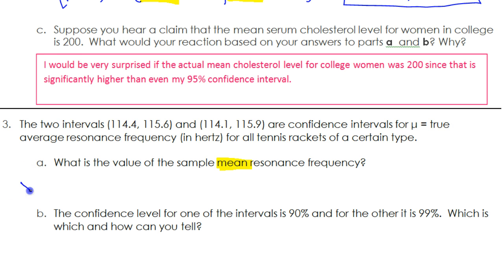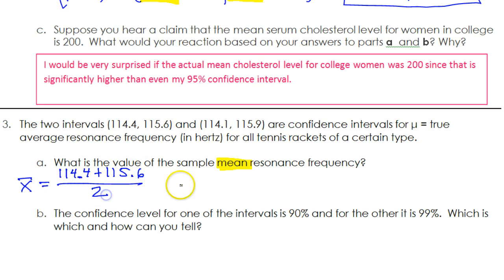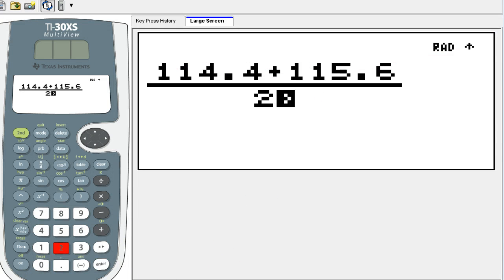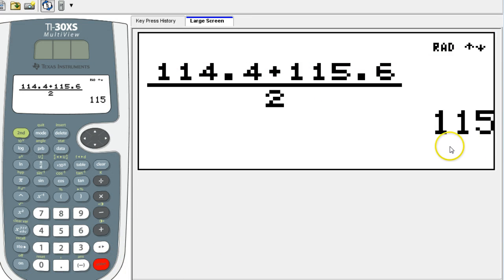So our sample mean, which we could show by x-bar, should be 114.4 plus 115.6 divided by two. And we should get the same answer using the other interval. It turns out to be exactly 115. So that must have been the sample mean.